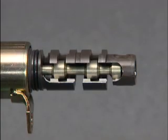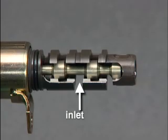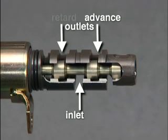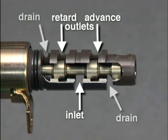The oil control valve has a single oil inlet but two outlets — one to the advanced side of the actuator and one to the retard side. The valve also has two built-in oil drain passages.